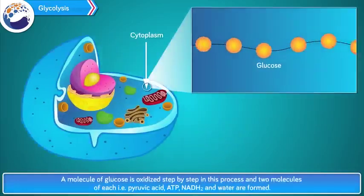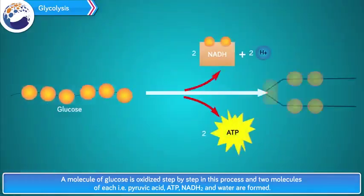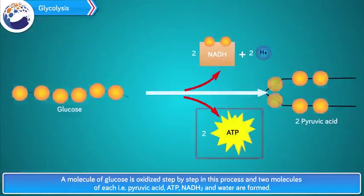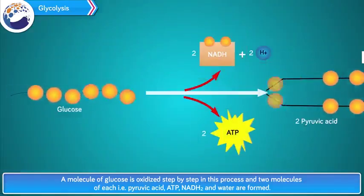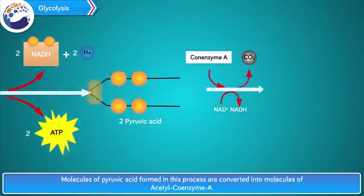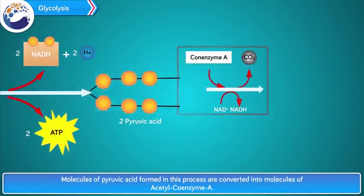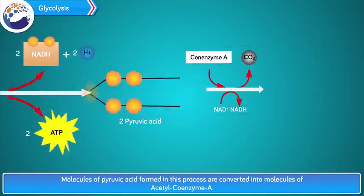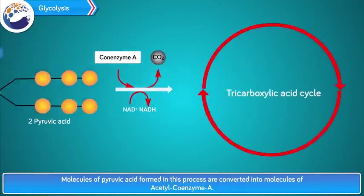A molecule of glucose is oxidized step by step in glycolysis, and two molecules each of pyruvic acid, ATP, NADH2 and water are formed. Molecules of pyruvic acid formed in this process are converted into molecules of acetyl coenzyme A. Two molecules of NADH2 and two molecules of CO2 are released during this process.